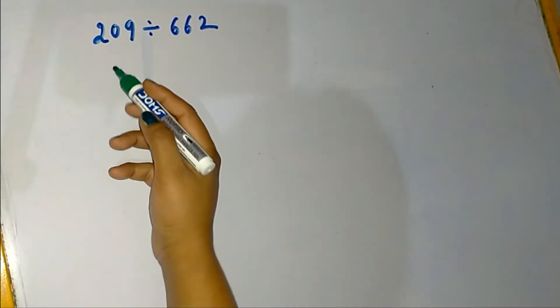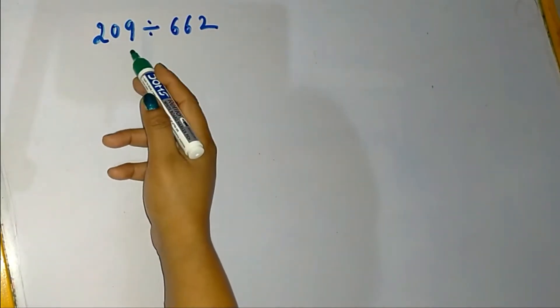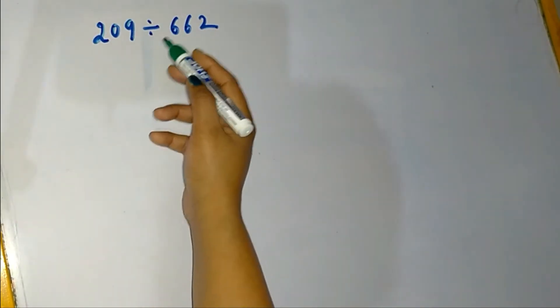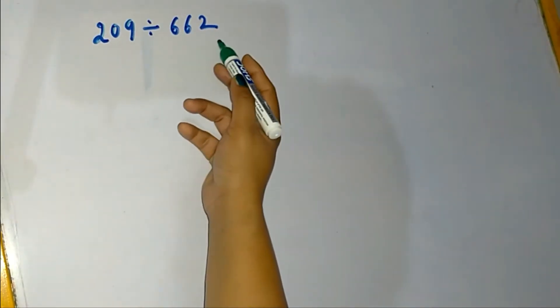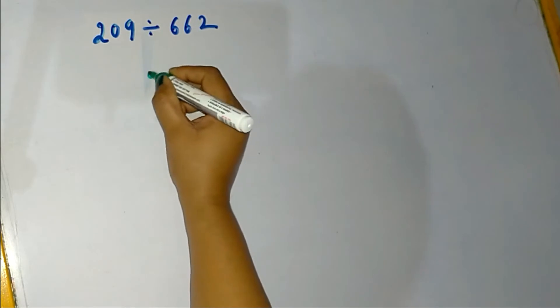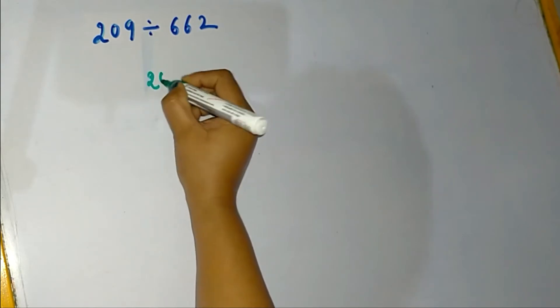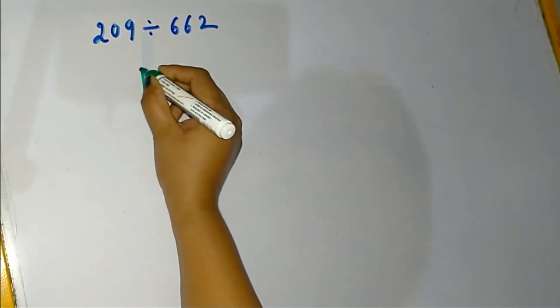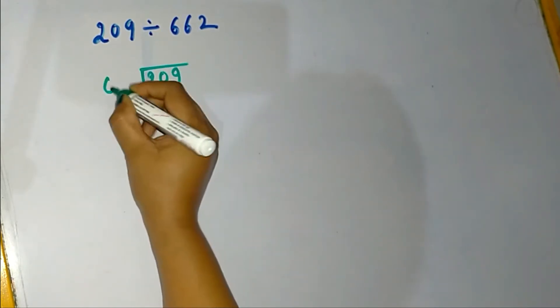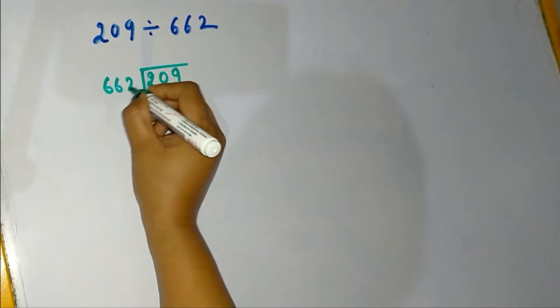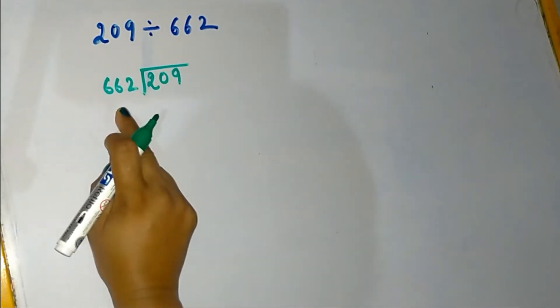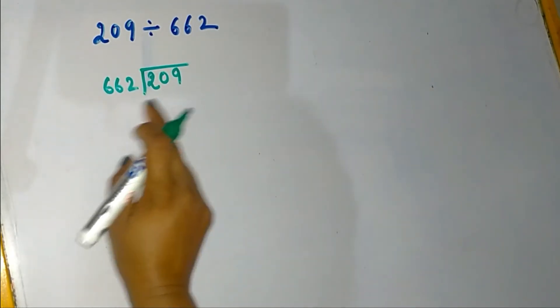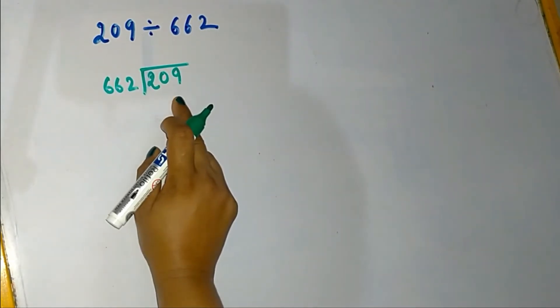Our question is 209 divided by 662. First of all, write down the number in long division form like this. Here we have a 3-digit divisor and a 3-digit dividend.